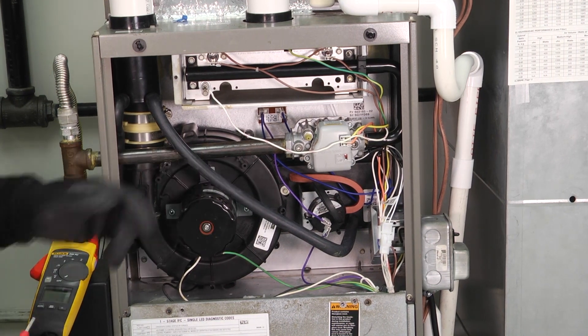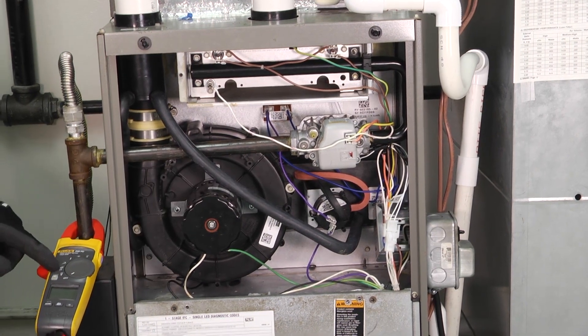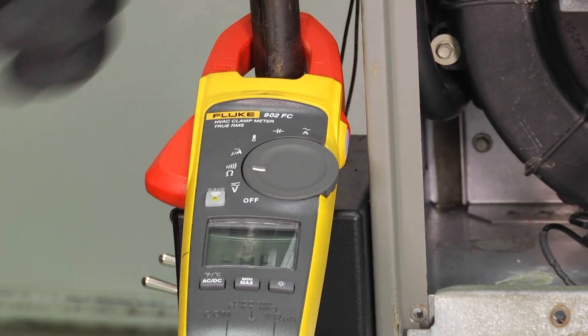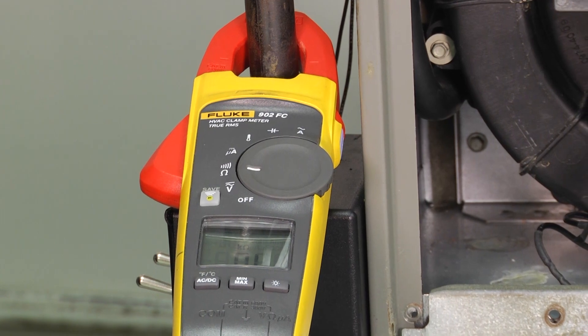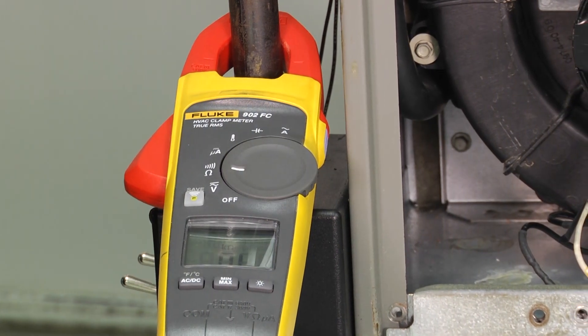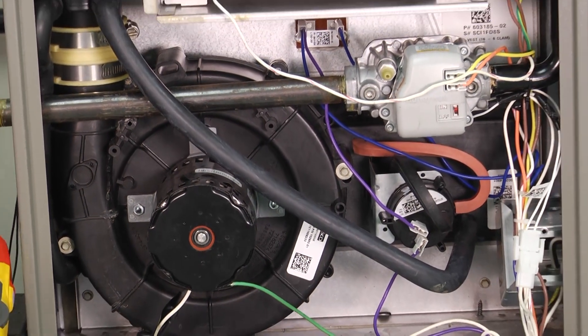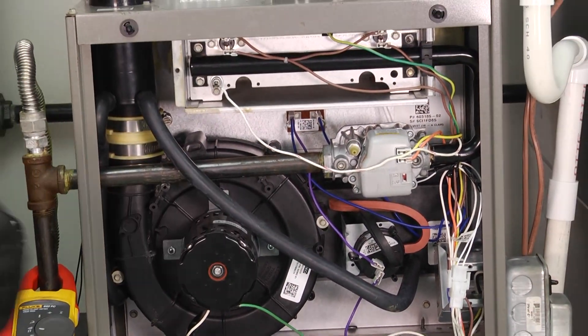So the very first thing, we have our meter. We're going to set our meter to ohms. Make sure that your system is de-energized, that it's not on. If you can happen to get to the hot surface igniter and the furnace has not been running, you can check it cold. That's going to give you the most accurate reading.